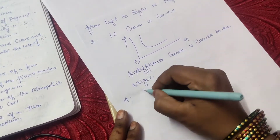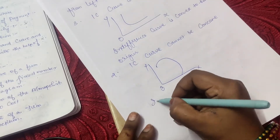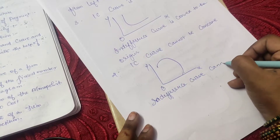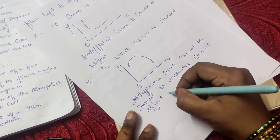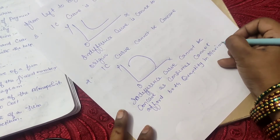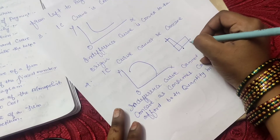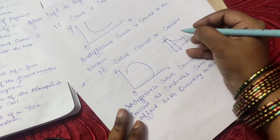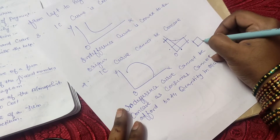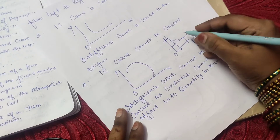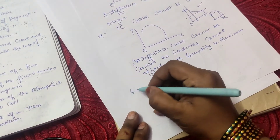Third point: indifference curve is convex to the origin — draw it like this. Fourth point: indifference curve cannot be concave. The reason is that a consumer cannot afford both quantities at maximum. If you buy one product at maximum, the other must be minimum, and vice versa. That is why the curve is convex to the origin. Going concave would mean purchasing both at maximum, which is not possible. So indifference curve is convex, not concave.